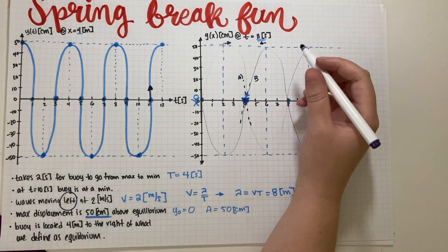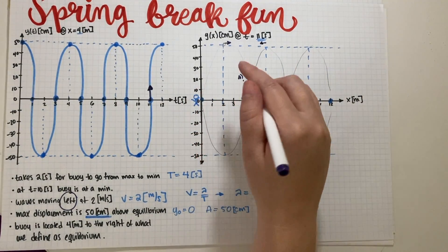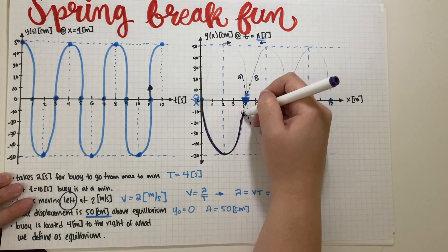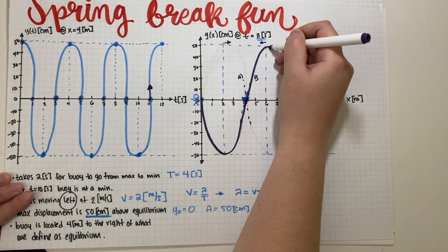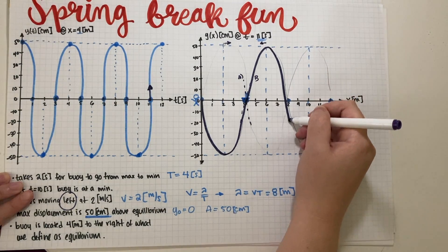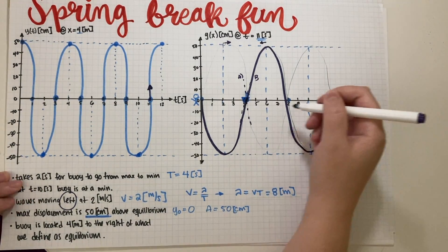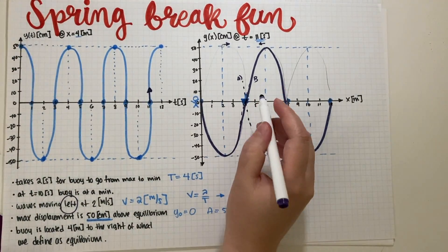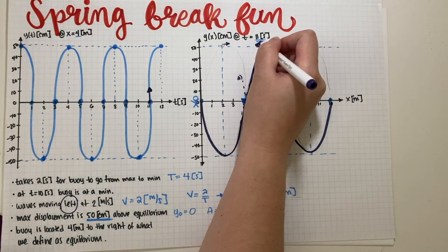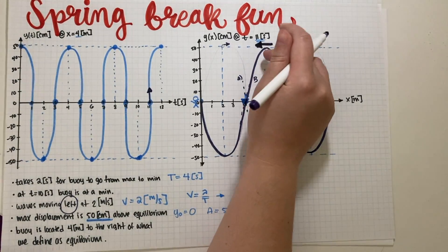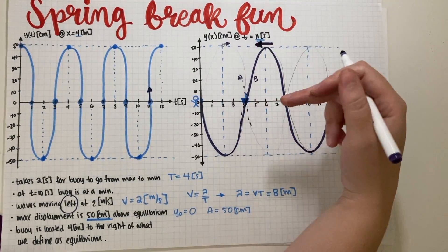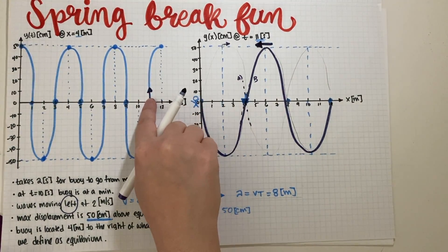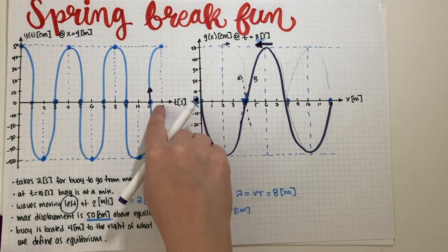The correct spatial graph starts with a minimum near the buoy's location, rises to a zero crossing, then continues upward. This is consistent with a leftward-moving wave causing the buoy to move upward in time, as we confirmed from the time-domain graph. Both graphs are now complete.